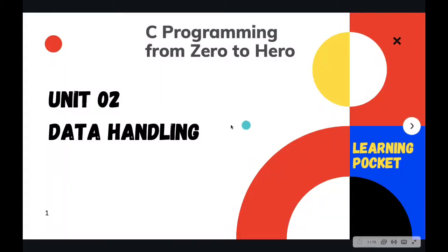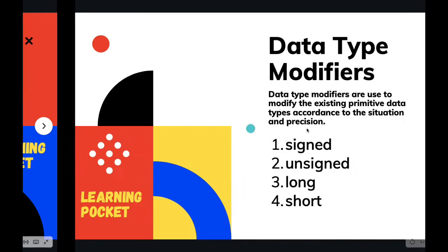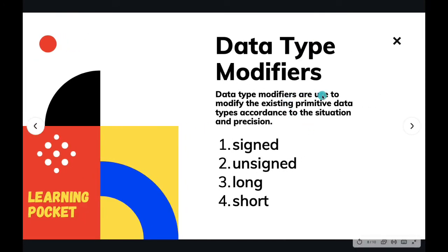Hello everyone and welcome back to Unit 2 of Data Handling. We have covered the fundamental data types and variables, and now we are going to study data type modifiers. So what are data type modifiers? Basically, data type modifiers, as the name suggests, are used to modify the given data type according to the situation or precision.